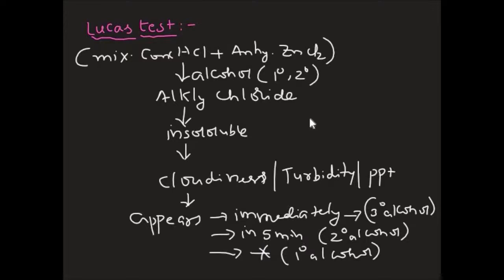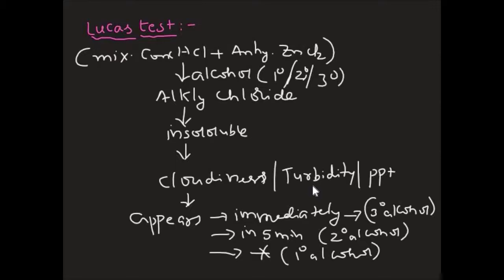If cloudiness appears in 5 minutes, then that is called a secondary alcohol. If there is no cloudiness and the solution remains colorless, that is called a primary alcohol. Tertiary alcohols react immediately, secondary alcohols react within 5 minutes, and primary alcohols do not react appreciably at normal temperature. This test is performed at room temperature only. If you heat it extensively, there is a possibility of getting cloudiness for primary alcohol, but at room temperature a clear solution indicates primary alcohol.